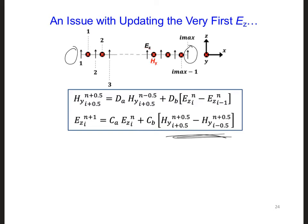So in other words, you're only going to be applying the update equation to the internal E_z components of the grid, because they all have neighboring H_y components.